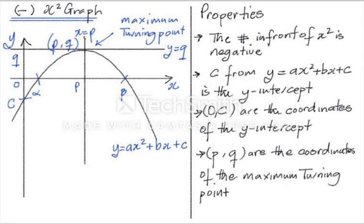Let's start off with the negative x-squared graph. In the session before, we looked at the positive x-squared graph, where if the number in front of x-squared is positive, you get a parabola that turns up — and this parabola would have a minimum turning point. But if the number in front of x-squared is negative, you get a parabola that turns down, and this parabola would have a maximum turning point.